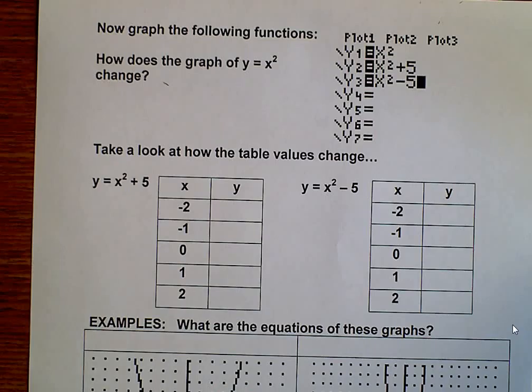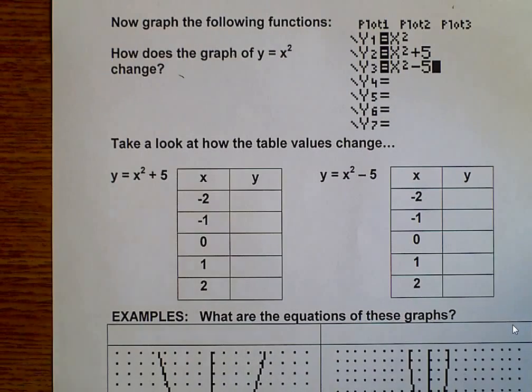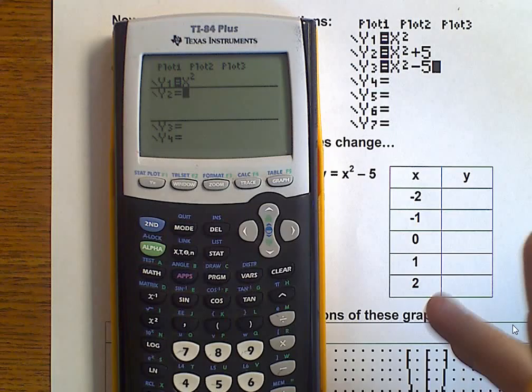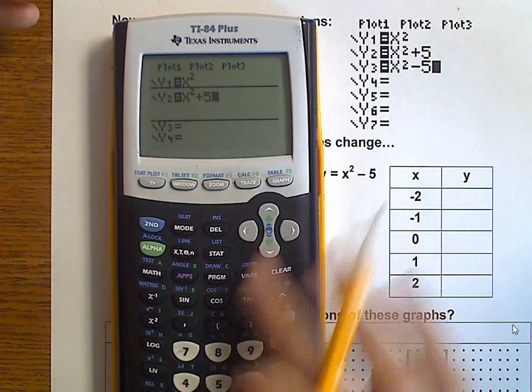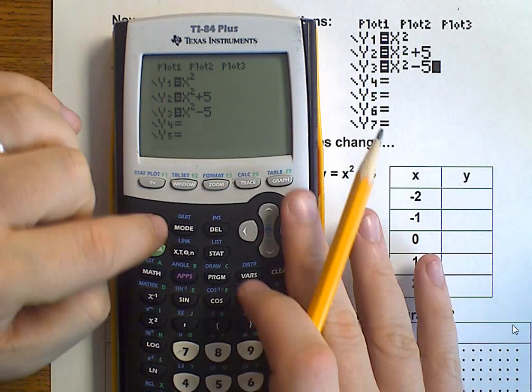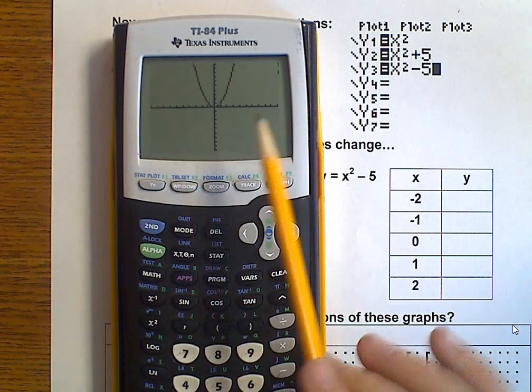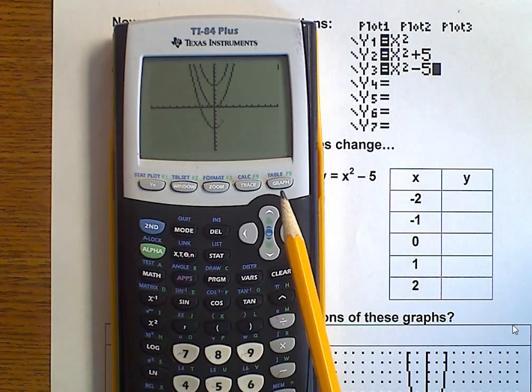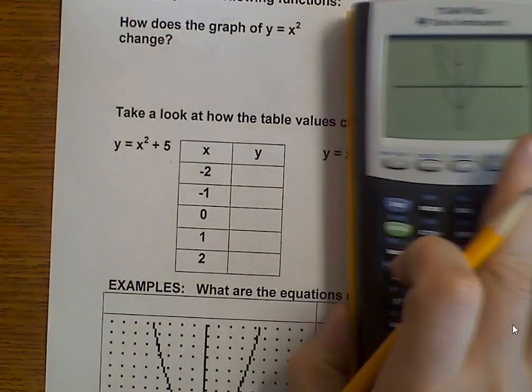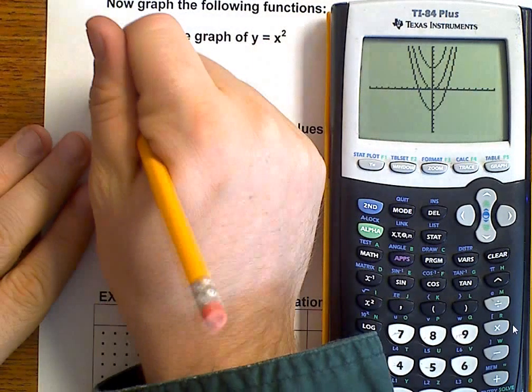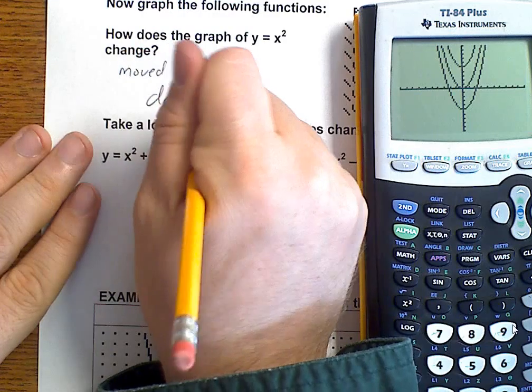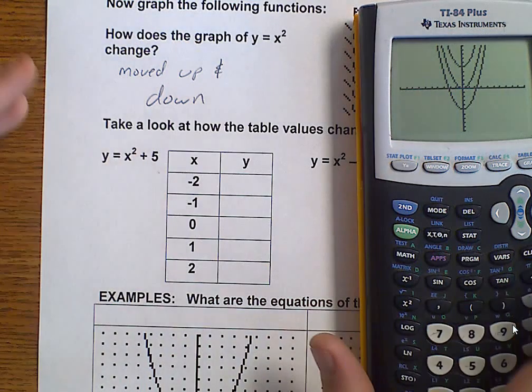Well, let's look at some other changes. So, this time, again, we're still comparing x squared, but now we have x squared plus 5 and x squared minus 5. Let's look and see what happens here. If we graph it. Well, there's x squared, x squared plus 5, and x squared minus 5. So, how does our graph change? It moved up and down.